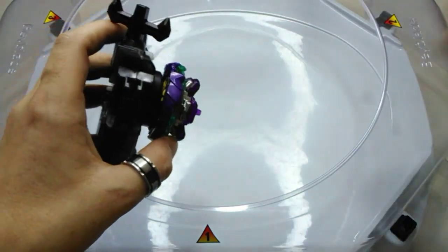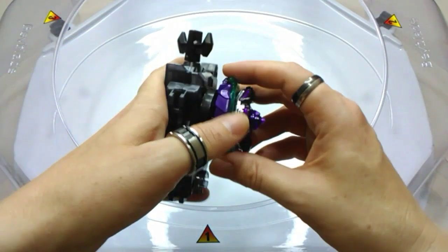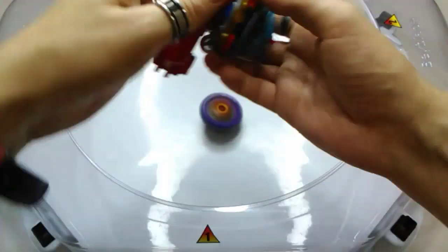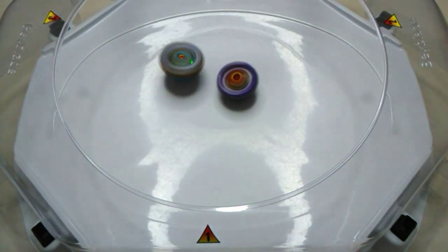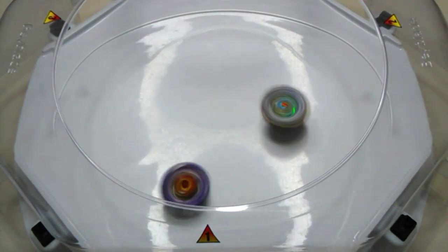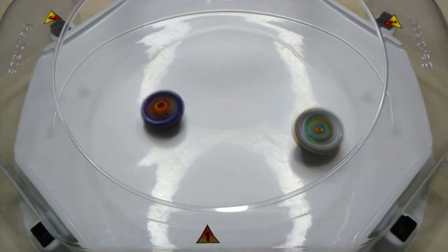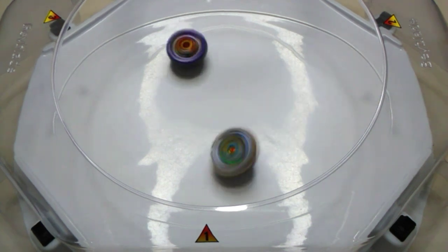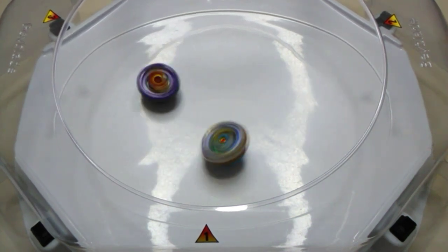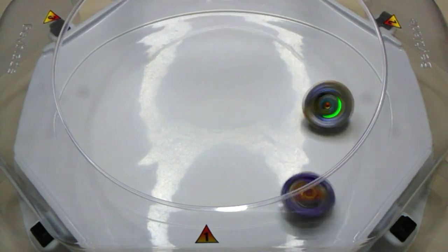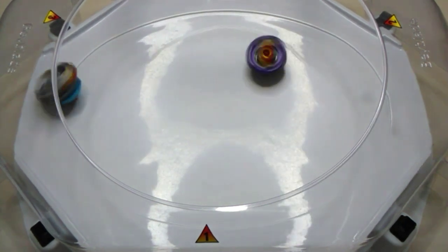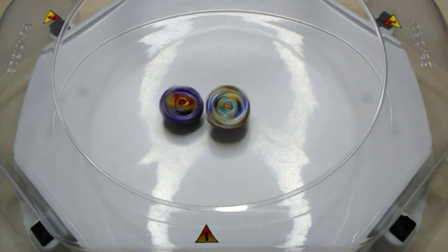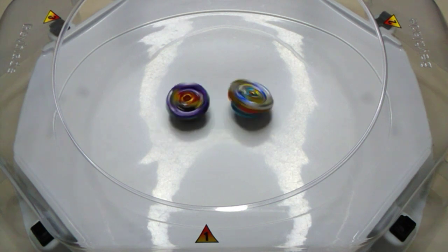Round number one, our first opponent will be Imperial Dragon himself, and three, two, one, go shoot. Now winding up is Dread Diabolos, that's Ignition Driver firing off for Imperial Dragon, and trying a bit of opposite spin direction. Holding in there well is our Dread Diabolos.